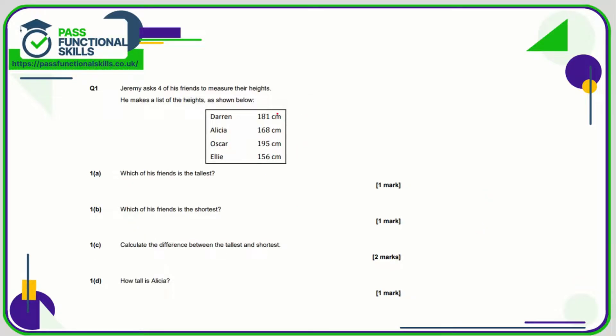Question 1A asks which is the tallest? So just look for the one with the biggest number, which is 195. So that is therefore Oscar. The shortest, that's the lowest value, 156, corresponds to Ellie.